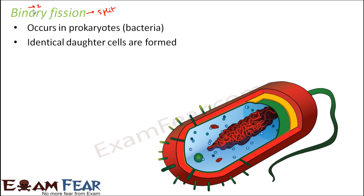In binary fission, identical daughter cells are formed. Suppose there is one parent cell — it divides to form two daughter cells. These two daughter cells will be identical to each other as well as to the parent cell. So all the cells will be exactly similar to each other, even genetically.